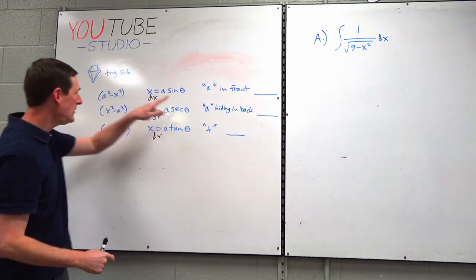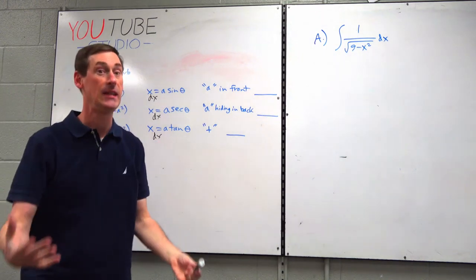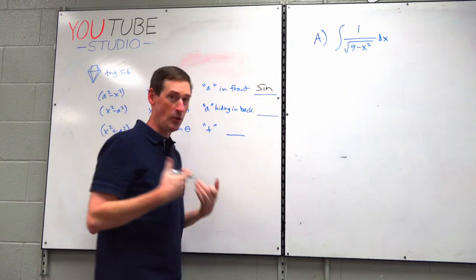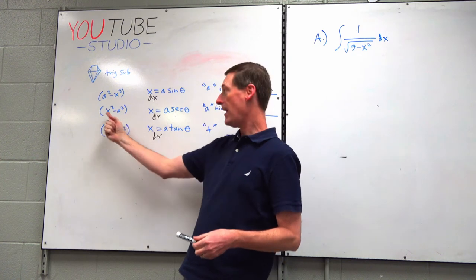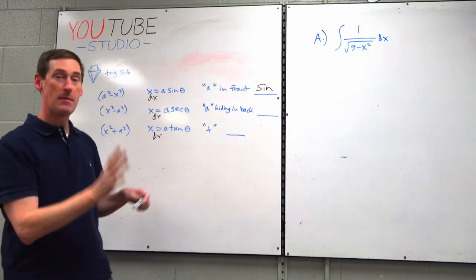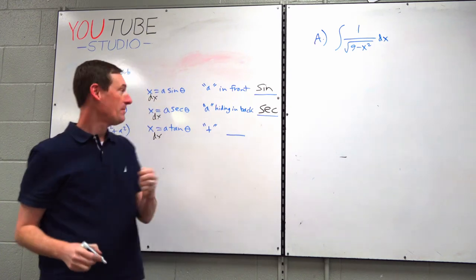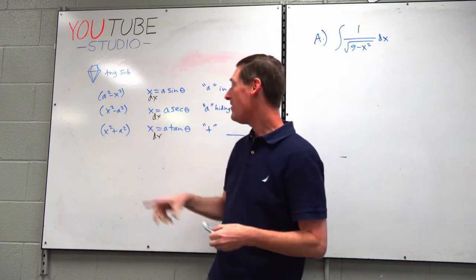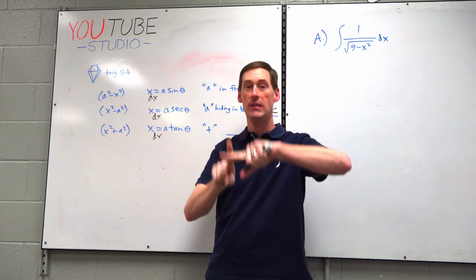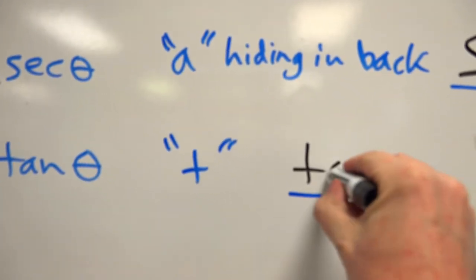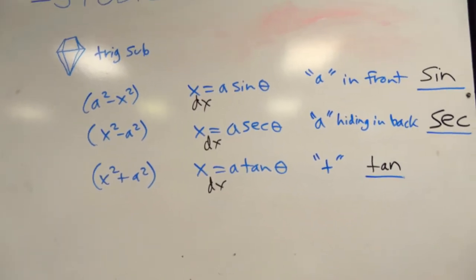Here's how you remember it: if the a is in the front of your binomial — just like The Scarlet Letter — it's a sin. The A is in front, so you use sine. If the a is in the back, like x² minus a², it's hiding in the back — it's a secret, so use secant. And if it's addition (x² plus a²), you use tangent. You really need a good mnemonic device to keep all this straight.